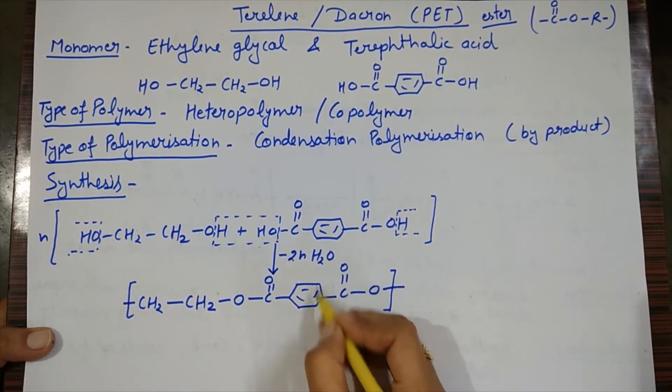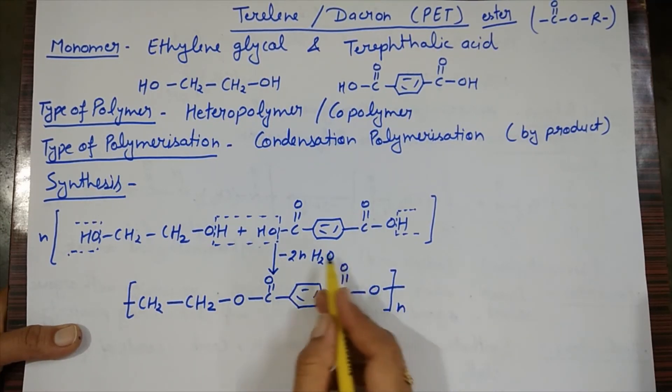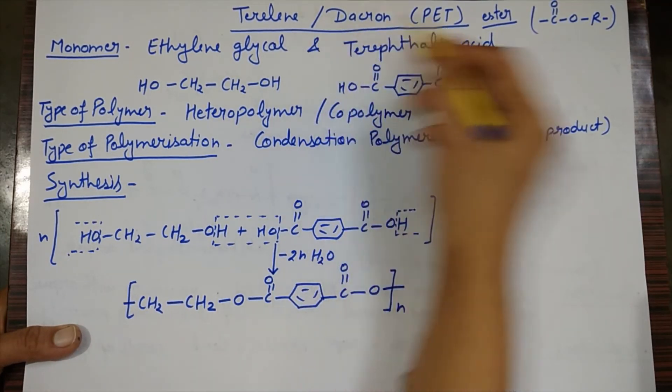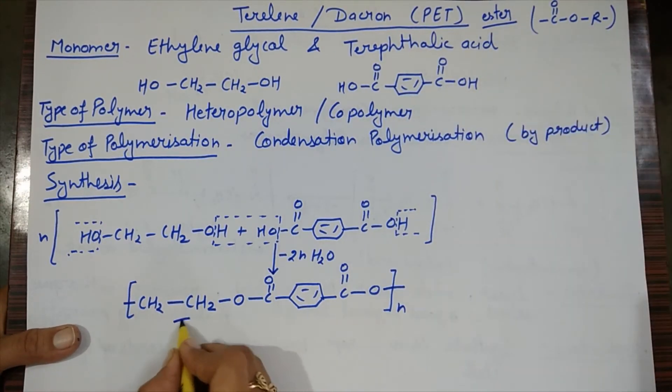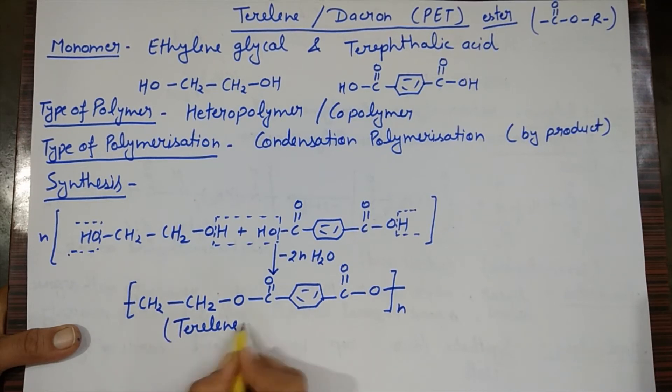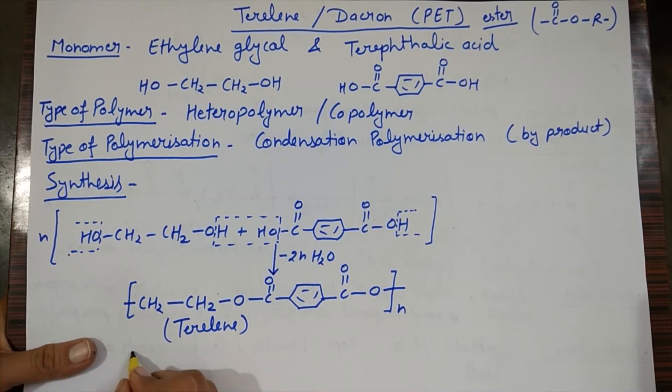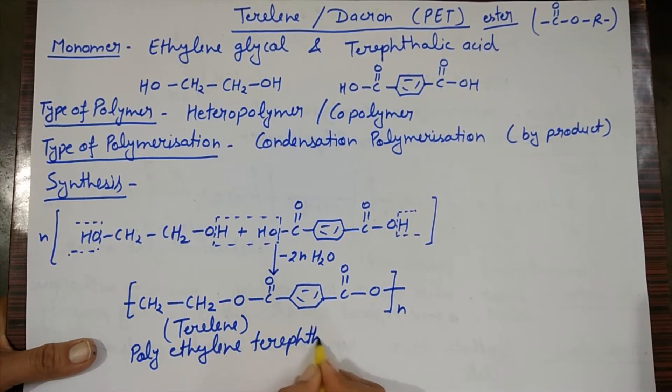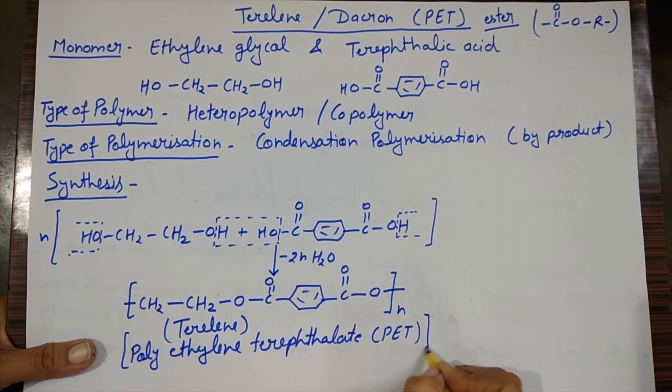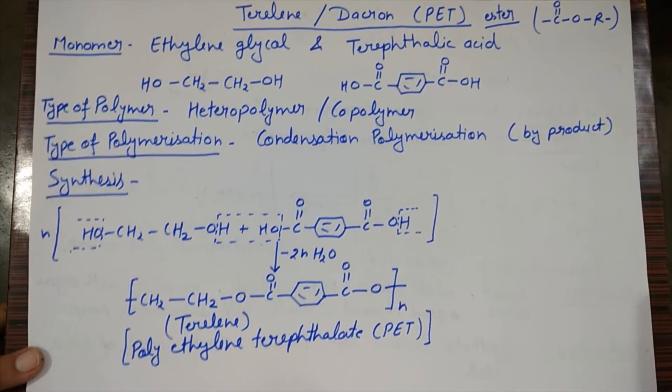The ester linkage. Because of that, the polymer Terylene is in the polyester category. So it is Terylene, or we can also write its chemical name: polyethylene terephthalate, which is also known as PET.